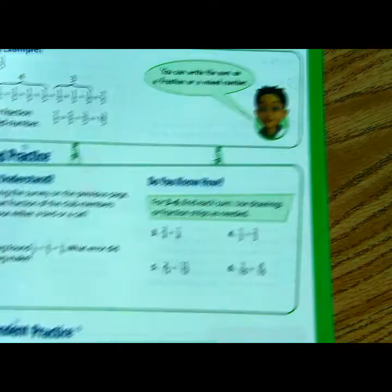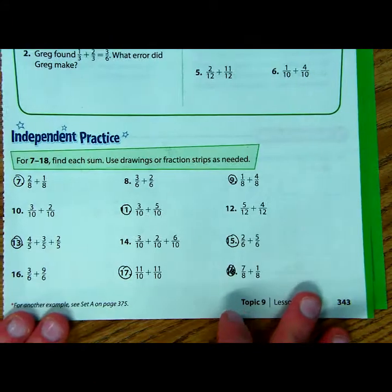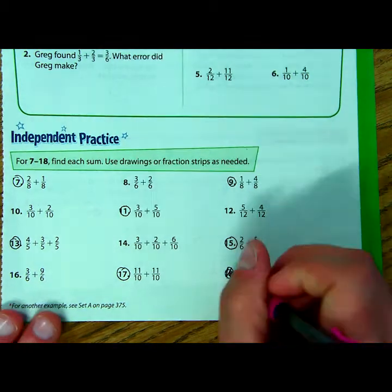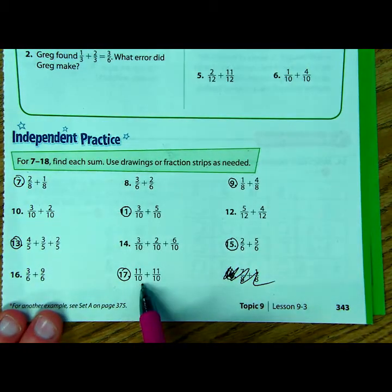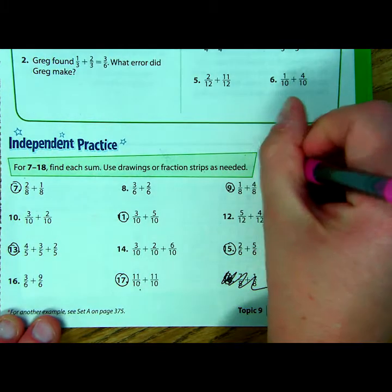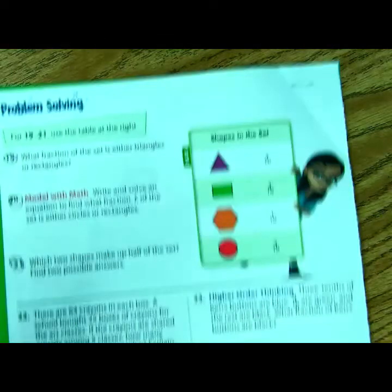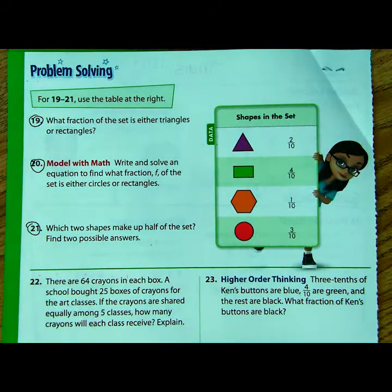So today, on this page, you are going to complete, right down here, seven through eighteen. So you're actually not going to do number eighteen. So I guess really seven through seventeen, and you're going to do the odd problems only, practicing adding fractions. And then when we turn the page,